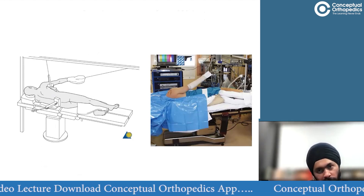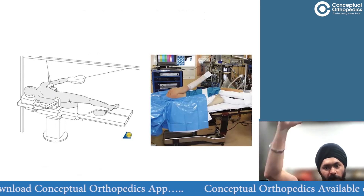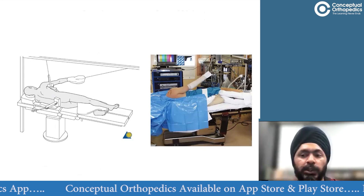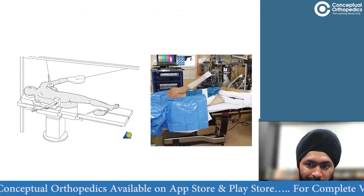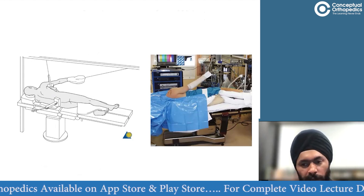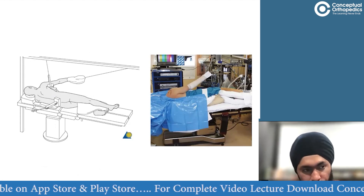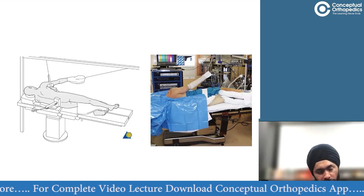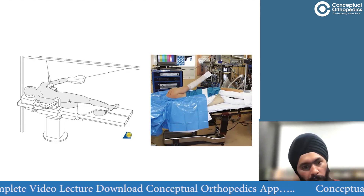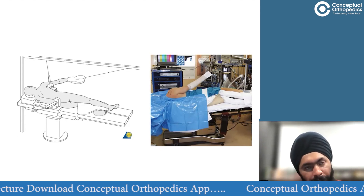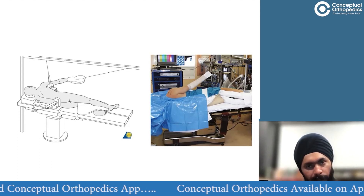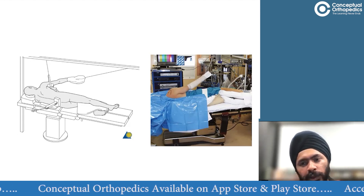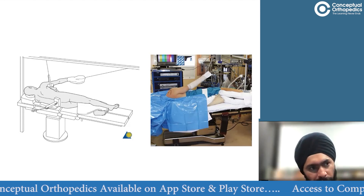If you are doing an intra-articular procedure like a Bankart repair, you need more abduction. When doing a subacromial or extra-articular procedure like a rotator cuff repair, decrease the abduction and you may increase the traction. Normally you don't need more than 3 to 4 kg of traction for a 70–80 kg individual. Increase abduction for intra-articular work like Bankart and labral procedures; decrease abduction for subacromial work.